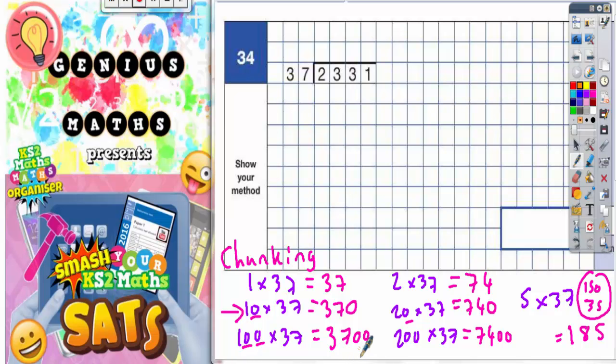We can't take off 7400 because that's too big, so what we can take off is 20 lots of 37, which is 740. Let's take that off and write 20 at the side. Now let's work out what we've got: 1 take away 0 is 1, we can't do 3 take away 4 so borrow: 13 take away 4 is 9, can't do 2 take away 7 so borrow: 12 take away 7 is 5, and 1 take away nothing is 1. We're down to 1591.